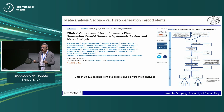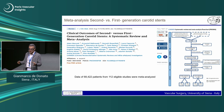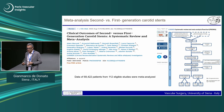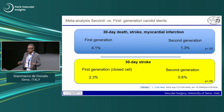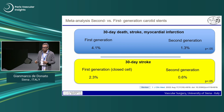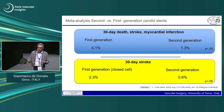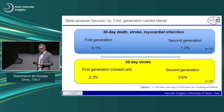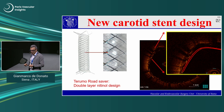Regarding second-generation stents, a meta-analysis and systematic review with the groups of Piety and Musialek showed that second-generation stents have a better composite endpoint of death, stroke, and myocardial infarction at 30 days compared to first-generation stents, including closed-cell designs.